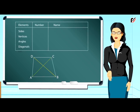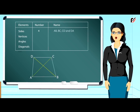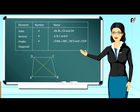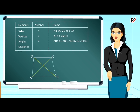Table of elements of a quadrilateral: Sides — four in number: AB, BC, CD and DA. Vertices — four in number: A, B, C and D. Angles — four in number: angle DAB, angle ABC, angle BCD and angle CDA. Diagonals — two in number: AC and BD. A quadrilateral may have some relations between its sides and angles; on the basis of these relations, quadrilaterals are classified and given different names.